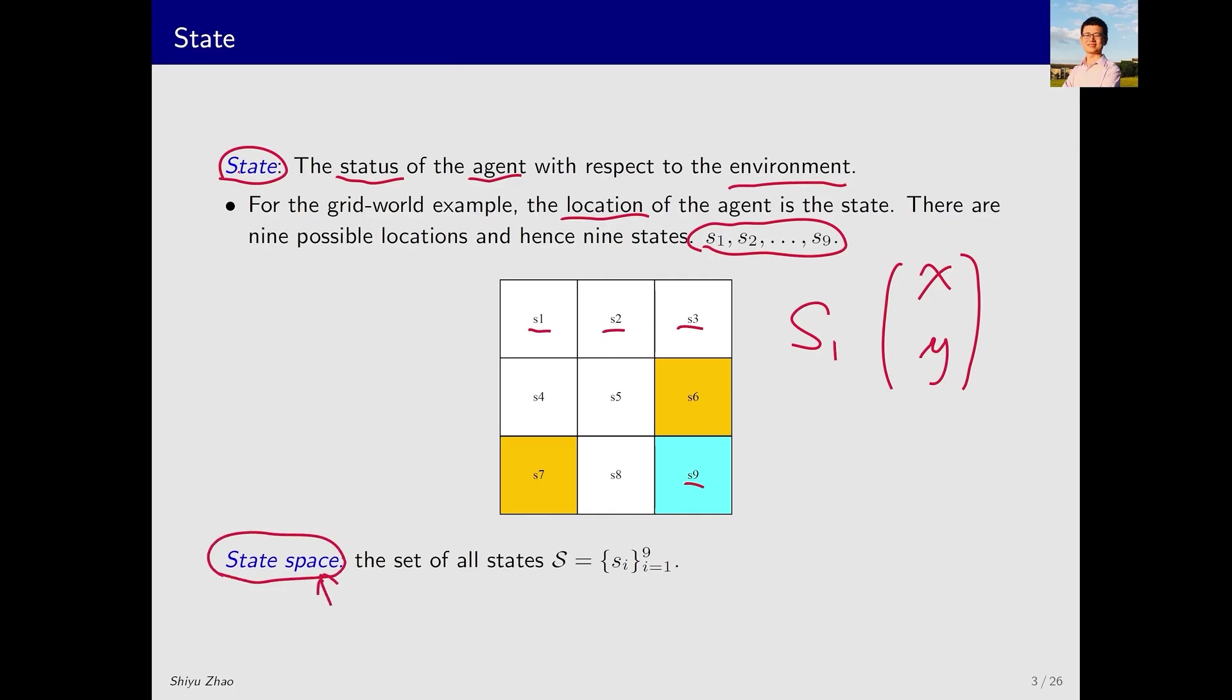The term space might sound complex at first hearing, but there's no need to feel intimidated. In essence, this space is simply a set. We use the symbol S to represent the state space, which is a collection of all possible states. The curly brackets on both sides indicate a set, which is a common notation. Sometimes we specify the range of I, but if not specified, we can infer the range of I from the context.